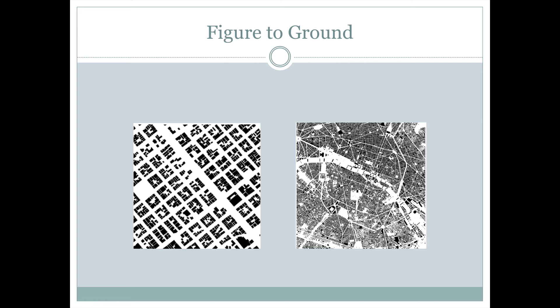We can also use figure to ground relationships in maps, and sometimes this depends on the scale of the map. I would say the map on the right is a good example of figure to ground, where we can clearly see where the wider streets are based on where the white areas are.